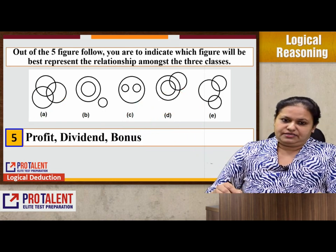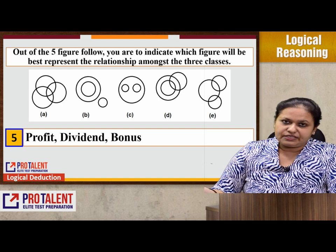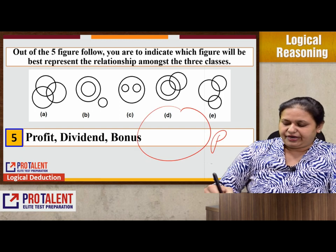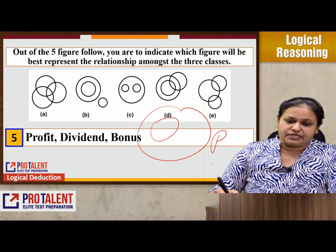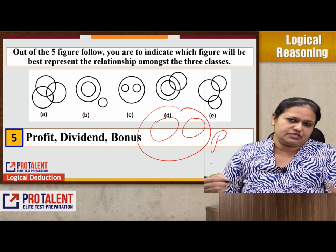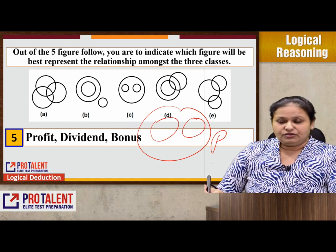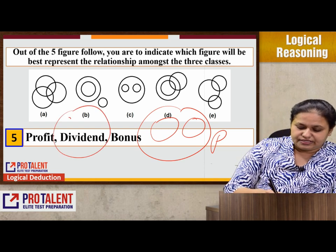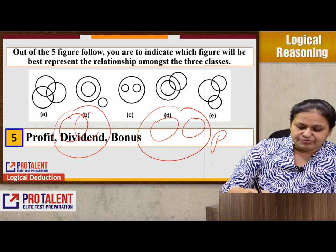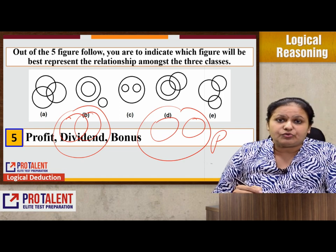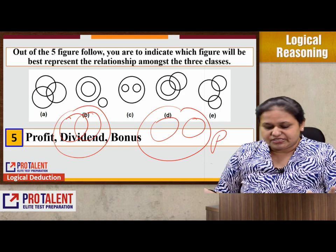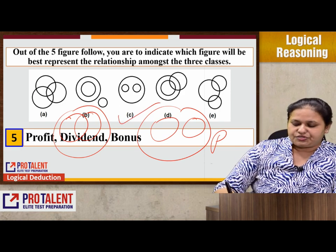Next question: profit, dividend, and bonus. Both dividend and bonus are types of profit. So if we take a profit circle, dividend is one kind of profit and bonus is also a part of it. You could argue that dividend and bonus could be separate sub-circles within profit. But do we have that option? No. So relatively the best option I have is option C.